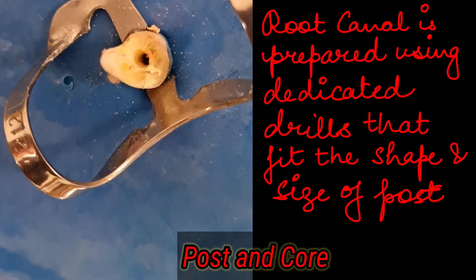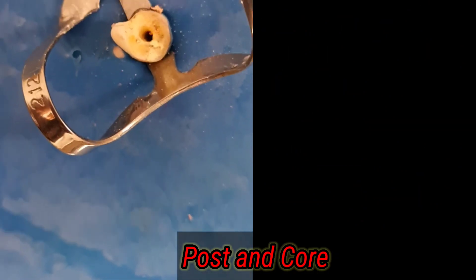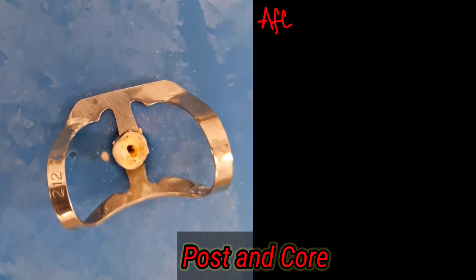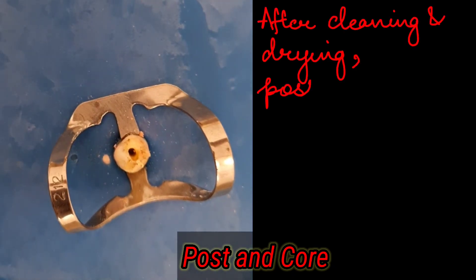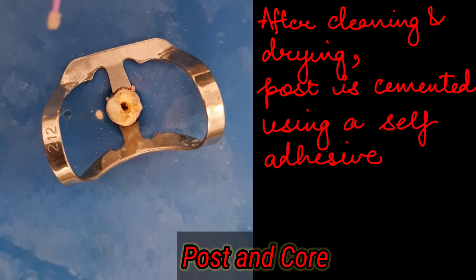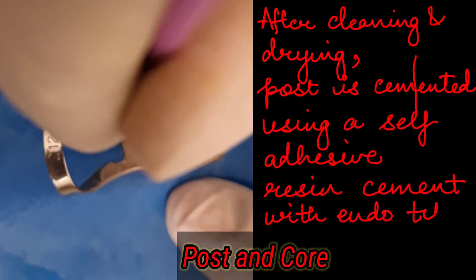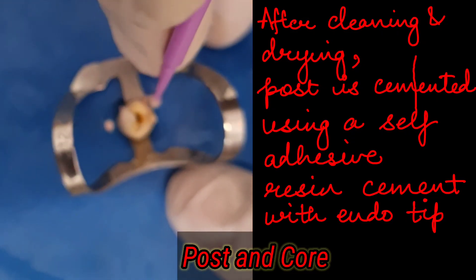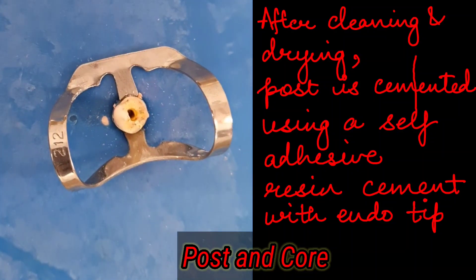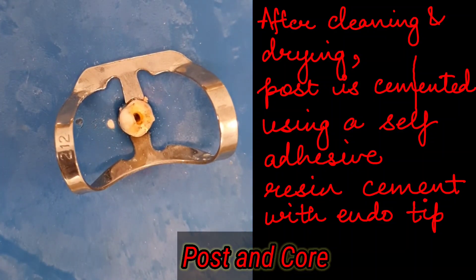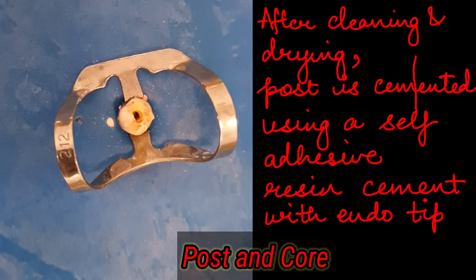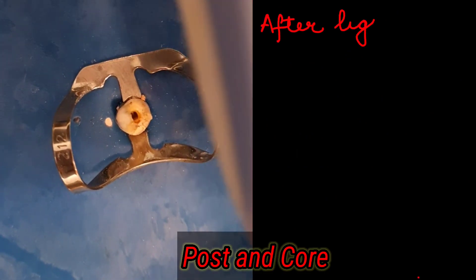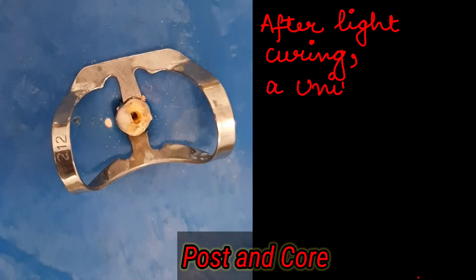Here you can see that the post preparation diameter is smaller than one-third of the root diameter. Now that we have prepared the root canal using the drills that fit into the shape and the size of the post, after cleaning and drying we use the bonding agent and primer and then we light cure it for five seconds.